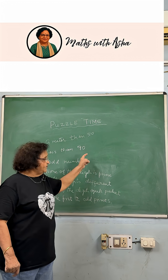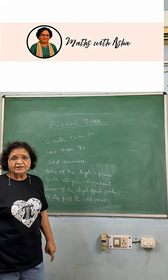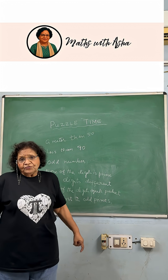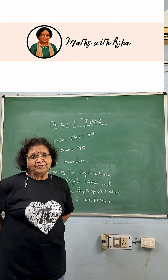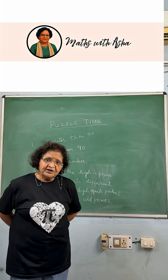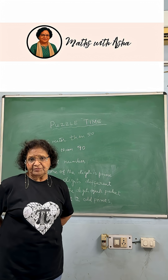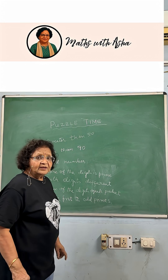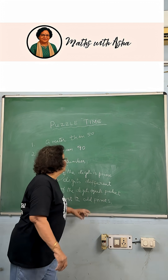And the sum of the digits is equal to the product of the first two odd prime numbers. So with this, we have to find out the house number and reach the party. So only those who could get the house number would be able to go. You can pause the video and try to find out the house number.